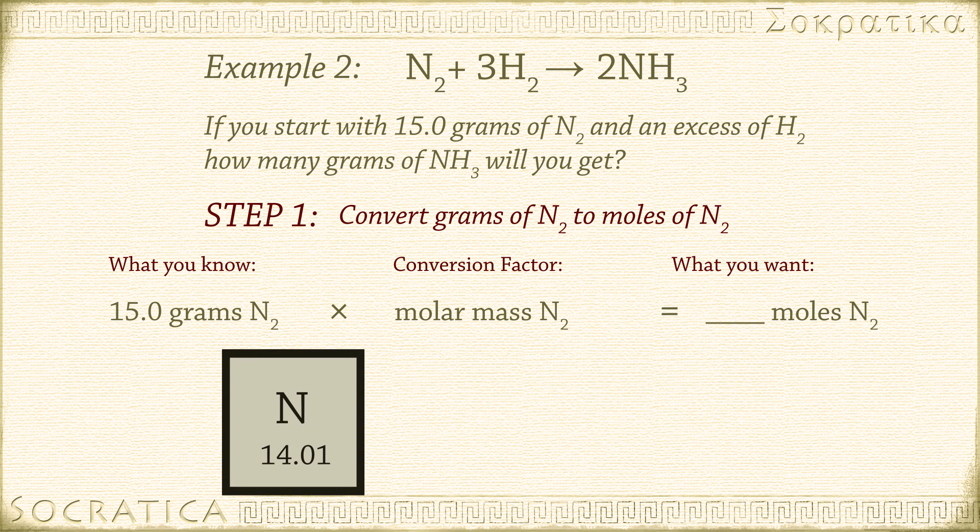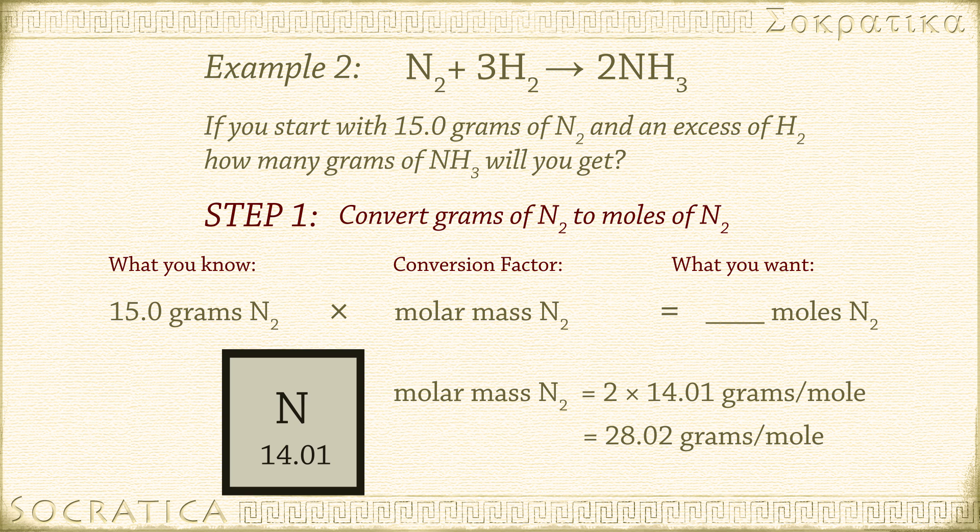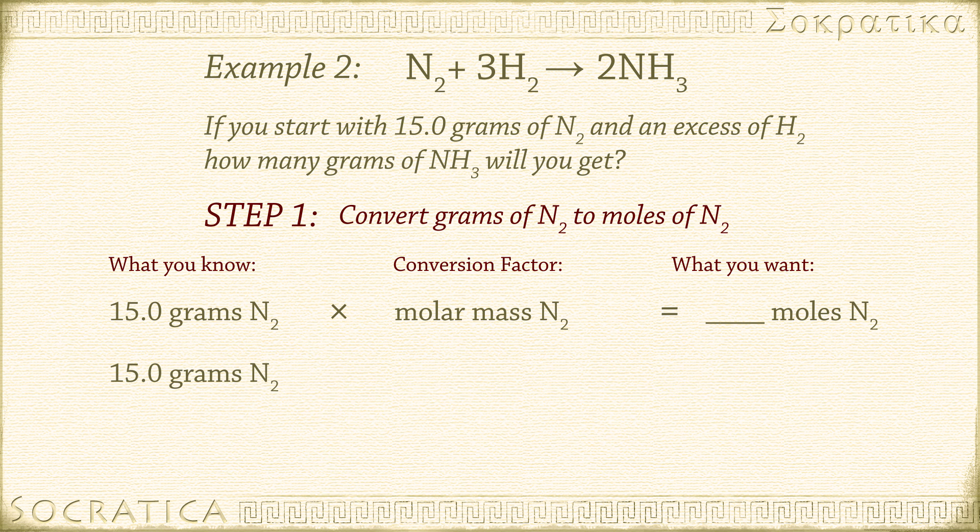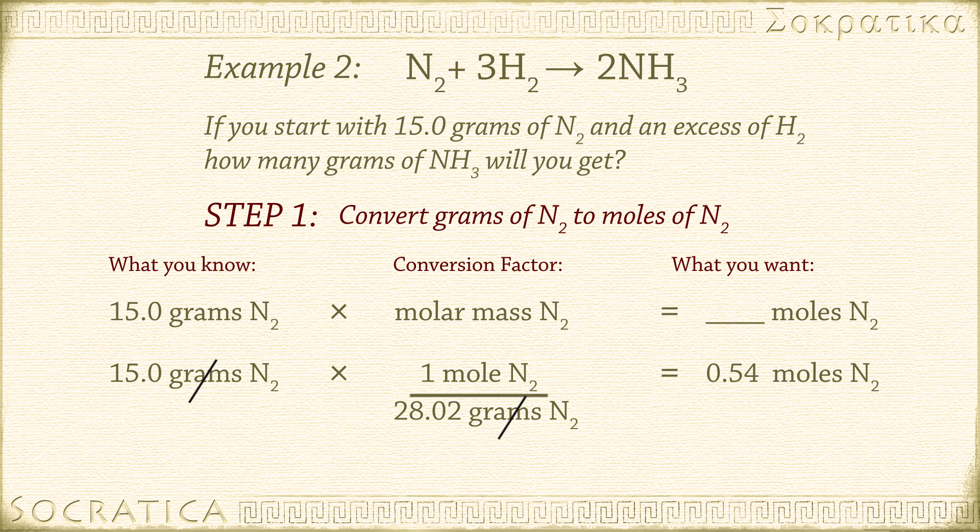We get the molar mass of N2 from the periodic table. The molar mass of N2 equals 2 times 14.01 equals 28.02 grams per mole. We'll invert our conversion factor so the units cancel. 15.0 grams of N2 times 1 mole over 28.02 grams, grams cancel, which gives us 0.54 moles of N2.